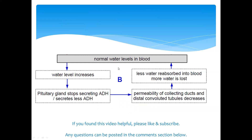Summary of the process: when the water level goes above normal, the hypothalamus picks it up and stimulates the pituitary gland to secrete less or no ADH. The lack of ADH decreases the permeability of the collecting ducts and the distal convoluted tubules. As a result, less water is reabsorbed into the blood, more water is lost in the form of urine, and the blood water content decreases and returns to normal.